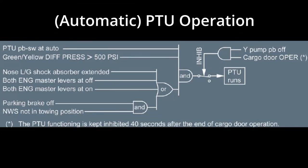Before we get into the differences of PTU operation on ground and in flight, some basic points about PTU operation: it is inhibited during the first engine start, it does a self-test during the second engine start, and it is inhibited during cargo door operations and for 40 seconds after the end of cargo door operations.